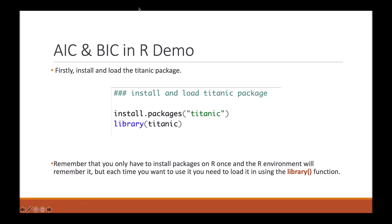Firstly, we need to install and load the Titanic package, as this is where we will get our data from. To install the package, you just need to type install.packages("titanic"), and then to load it, you just need to type library(titanic). Remember that you only have to install a package on R once and your environment will remember it, but each time you want to use it, you do need to load it in using the library function.